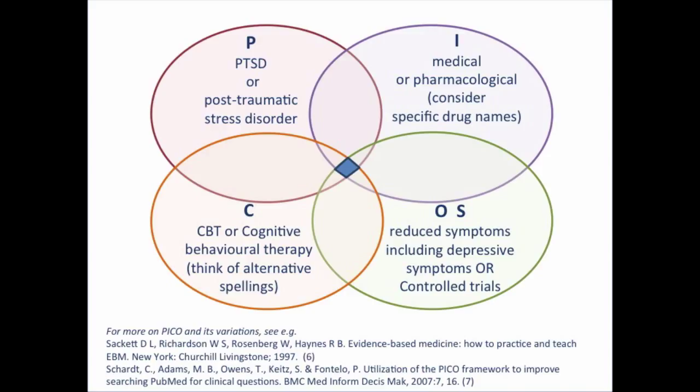If you have other types of questions, you could consider using fewer or different components for structuring your question. For example, if you were interested in the prevalence of a condition, you would probably just want to use the P for population and O for outcome components. Or perhaps if you want to understand how exposure to something influences health outcomes, you might have P for population, an exposure instead of an intervention, and then the outcome of interest. If you look around, you'll find variations of the PICOS structure, for example PICOS or PICOT, where the S or T stand for study design or type of study.